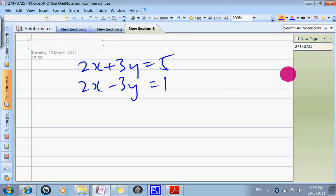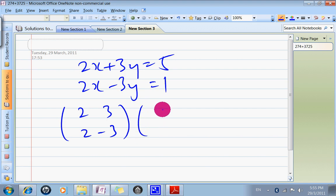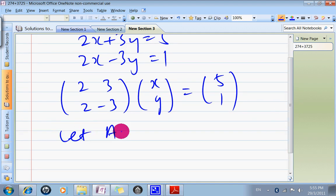Step 1, we've got to write it in matrix form. So we write down 2, 3, 2 negative 3, times xy equals 5, 1. Once that's done, we're going to let A equals 2, 3, 2 negative 3.